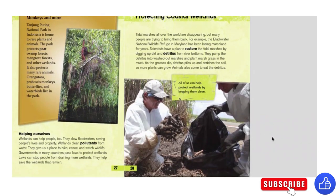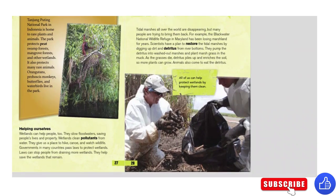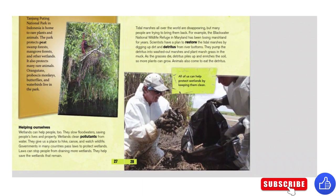Protecting Coastal Wetlands. Tidal marshes all over the world are disappearing, but many people are trying to bring them back. For example, the Blackwater National Wildlife Refuge in Maryland has been losing marshland for years. Scientists have a plan to restore the tidal marshes by digging up dirt and detritus from river bottoms, pumping it into washed-out marshes, and planting marsh grass in the muck. As the grasses die, detritus piles up and enriches the soil so more plants can grow. Animals also come to eat the detritus. All of us can help protect wetlands by keeping them clean.